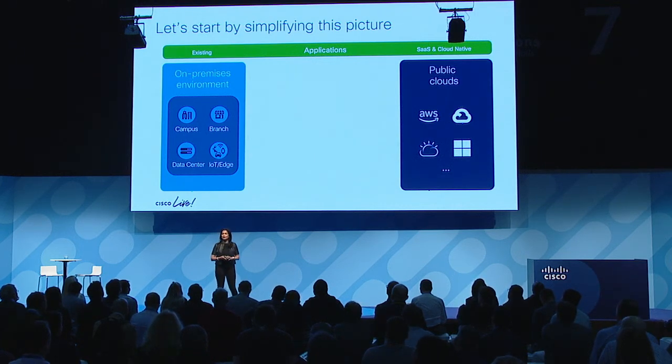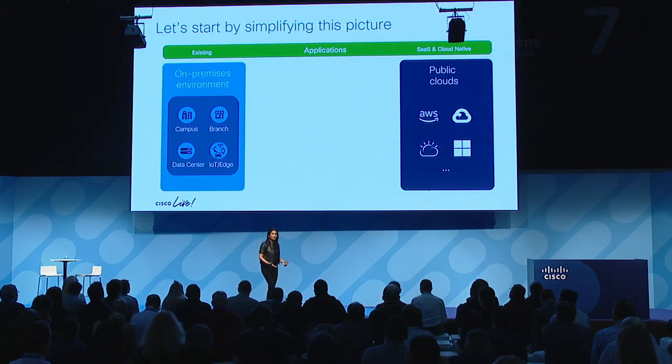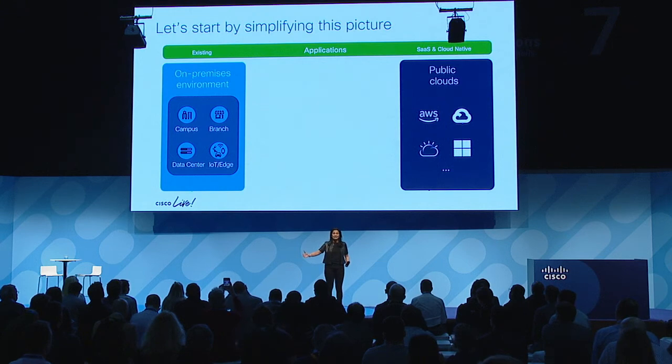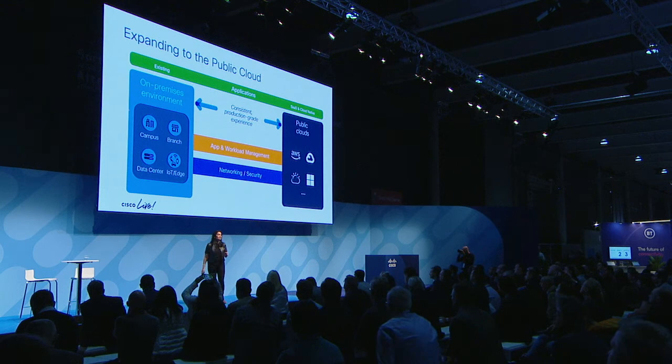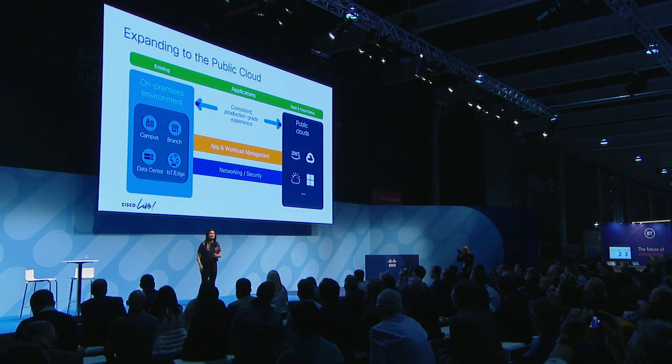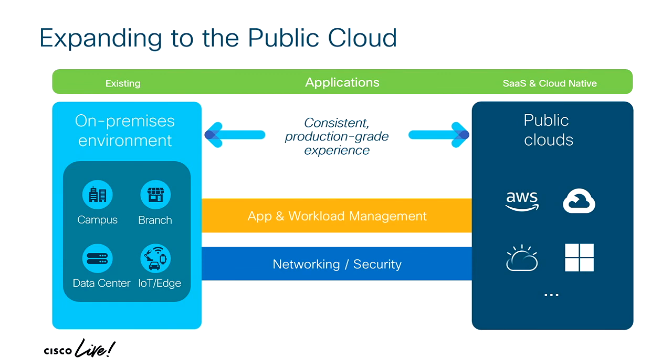On the left you have your on-premises environment — complete control, lots of applications deployed there. On the right is the public cloud with vast amounts of innovation that your developers need, and it keeps adding on. It's not a static world, it's very dynamic. What you want is to extend into that environment while maintaining the same consistent networking and security policies on-prem, and extend that into the cloud.